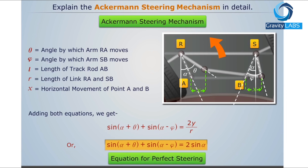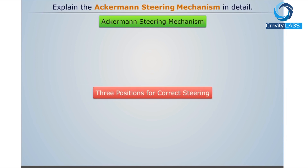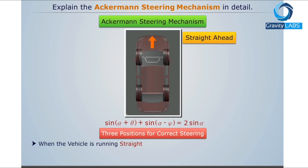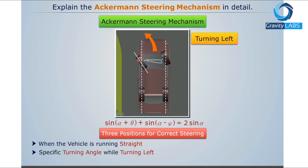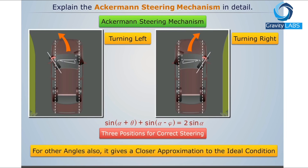This mechanism gives the following three positions for correct steering: FITA equals 0, that is when the vehicle is running straight; a specific turning angle while turning left; and a specific turning angle while turning right. However, for other angles also it gives a closer approximation to the ideal condition. That is why this mechanism is universally used.